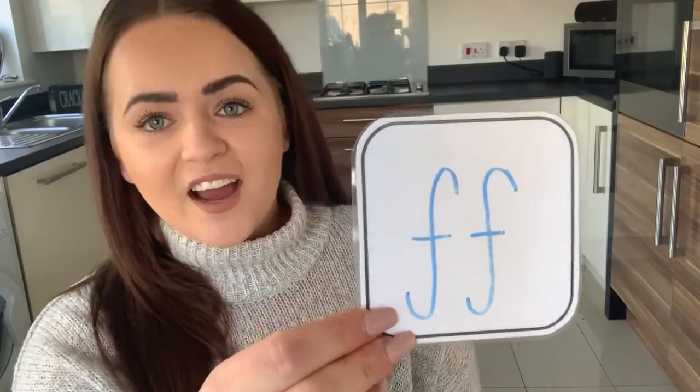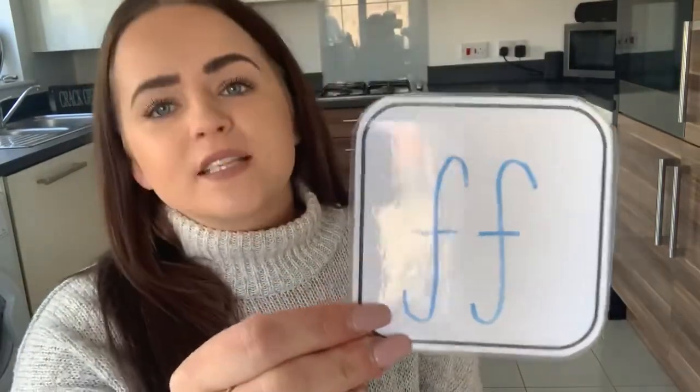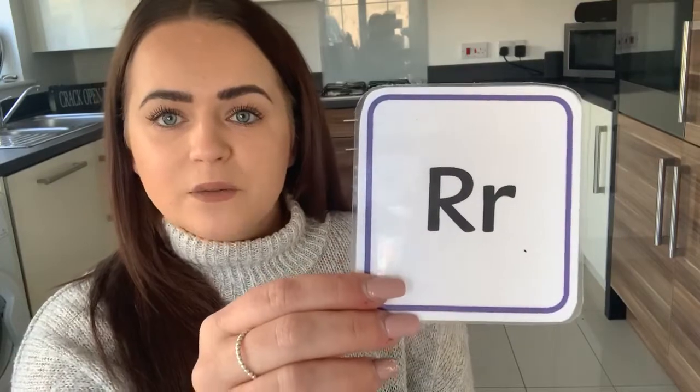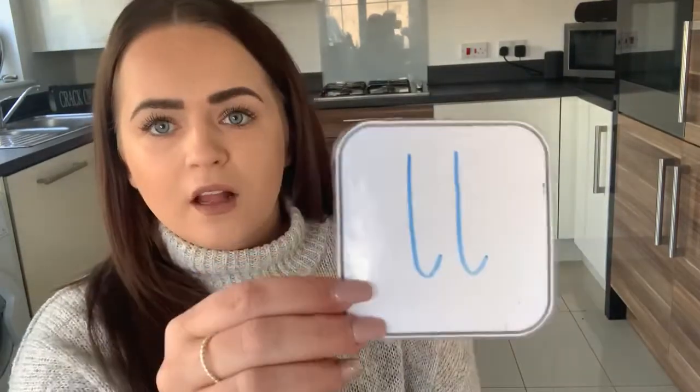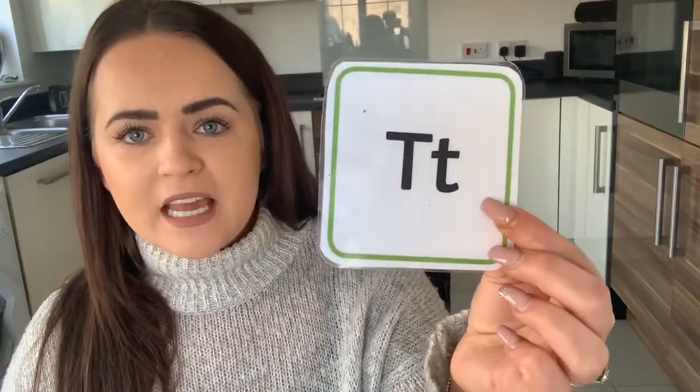It's a digraph. A digraph has two letters. A digraph makes one sound. My name is U and my sound is U. My name is I and my sound is I. My name is R and my sound is R. My name is C and my sound is K. My name is T and my sound is T. My name is L and my sound is L.